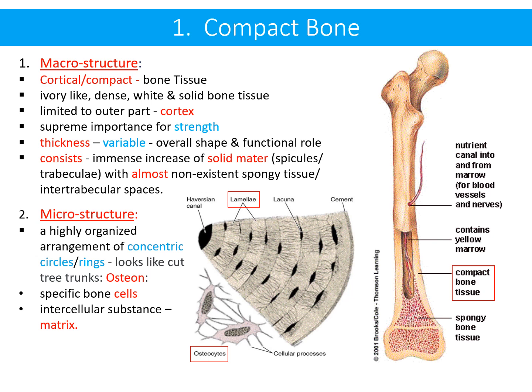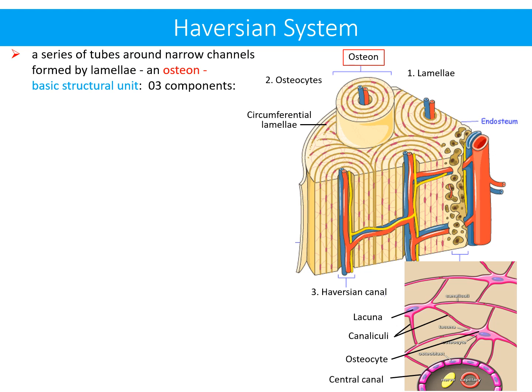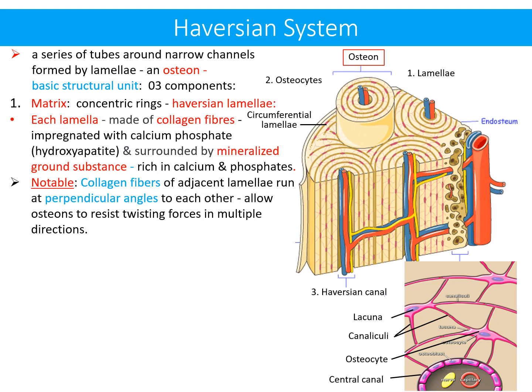The basic structural unit of compact bone is the osteon, which consists of specific bone cells and intercellular substance called the matrix. The Haversian system is composed of a series of tubes around narrow channels formed by lamellae. The osteon is composed of three components: the first is the matrix, present in the shape of concentric rings, also named concentric Haversian lamellae.